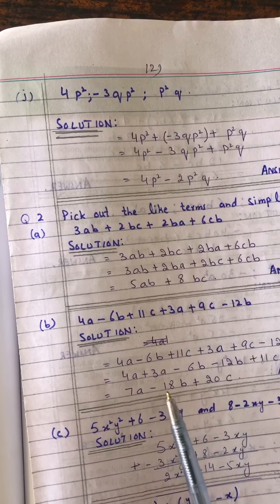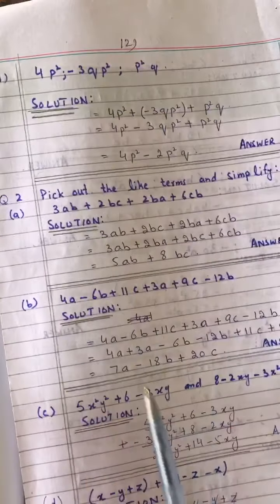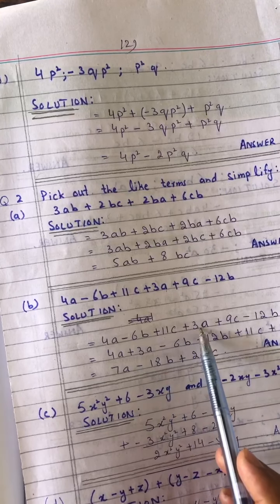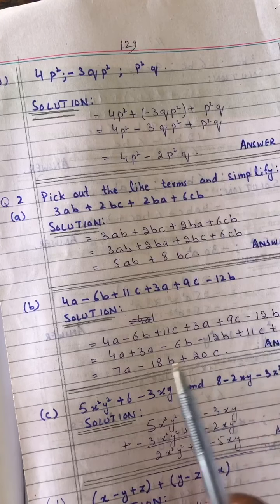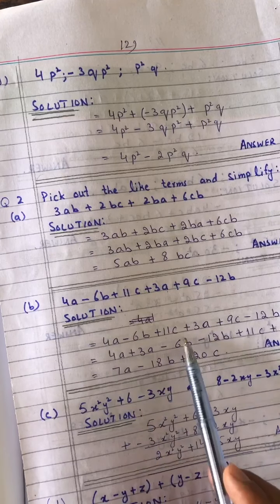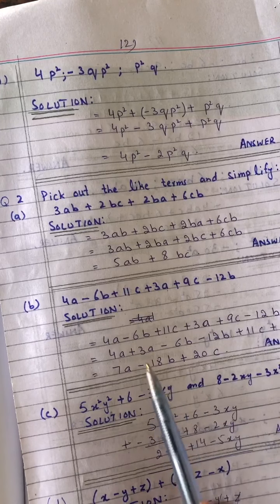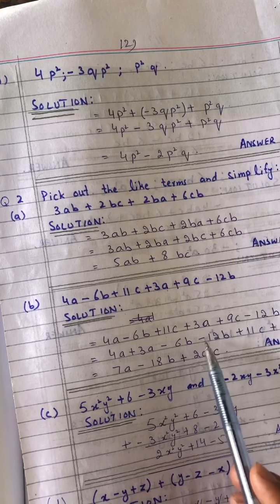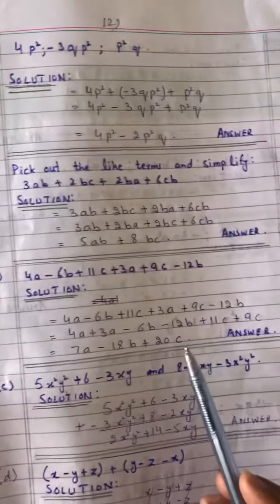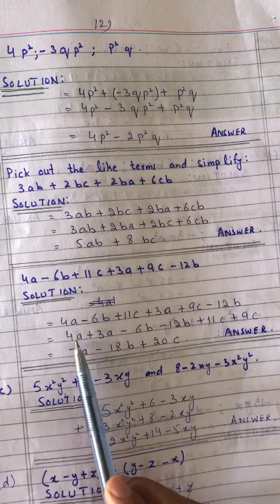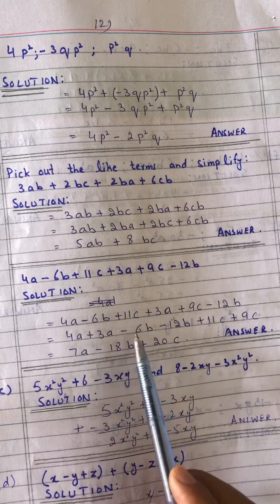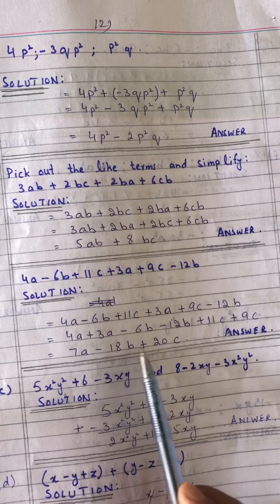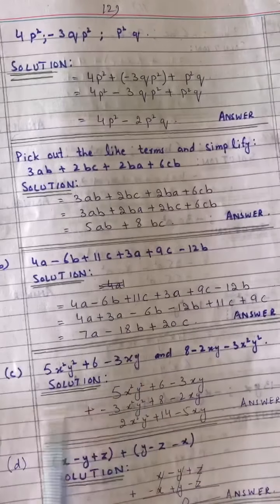Part B: 4a + 11c + 3a + 9c minus 12b. Like terms: a terms — 4a + 3a = 7a; b terms — minus 12b; c terms — 11c + 9c = 20c. Answer: 7a minus 12b plus 20c. Wait — corrected: minus 18b plus 20c.